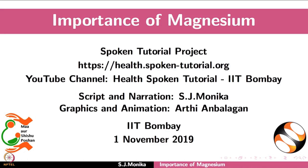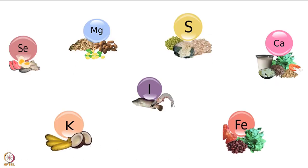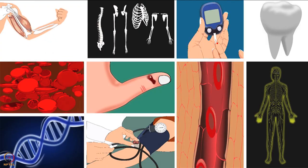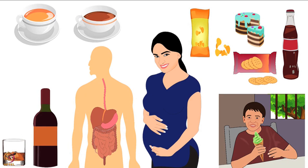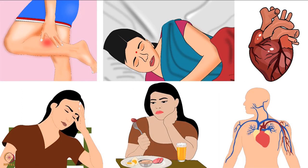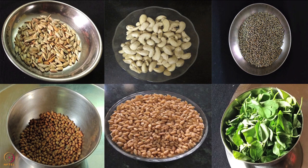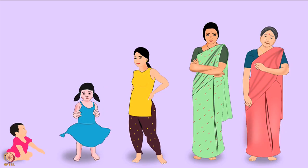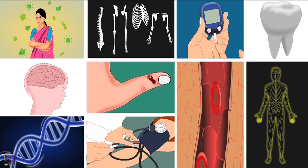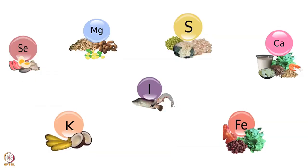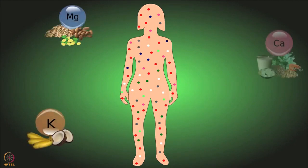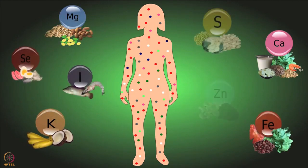In this tutorial we will learn about minerals as essential nutrients, the importance of magnesium in our diet, causes and symptoms of its deficiency, food sources of magnesium, and requirements for different age groups. Let's understand why minerals are necessary in our diet. Minerals are essential nutrients and we require them in small quantities for good health.